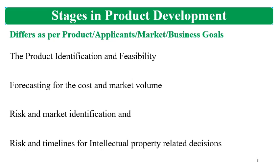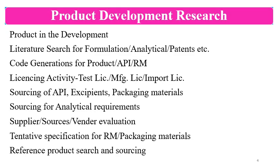First is product identification and feasibility of manufacturing. If manufacturing feasibility is not possible in the organization, these products can be given to CMOs and contract development laboratories. If feasibility is there, it comes to forecasting for cost and market value. Then risk identification and market identification, and risk and timelines for intellectual property-related decisions. If the product is patented by the innovator, or the API is patented, then as per intellectual property rights, patents, copyrights, or trademarks, these risks are evaluated and timelines are identified. After this, the product enters the development stage in R&D.